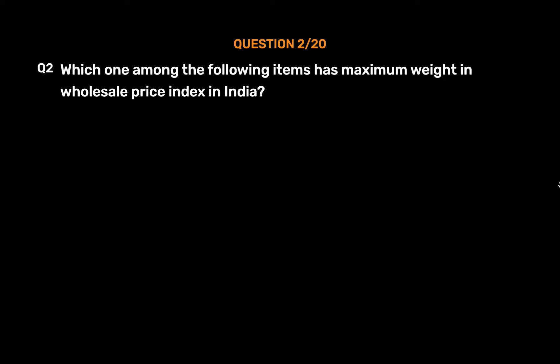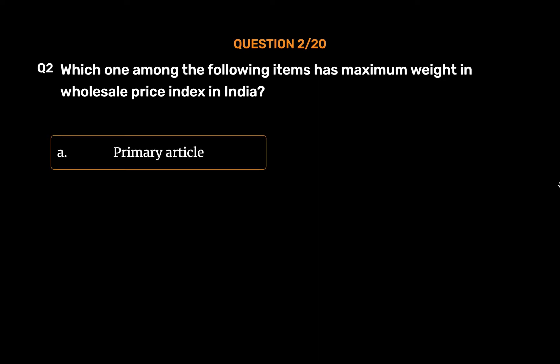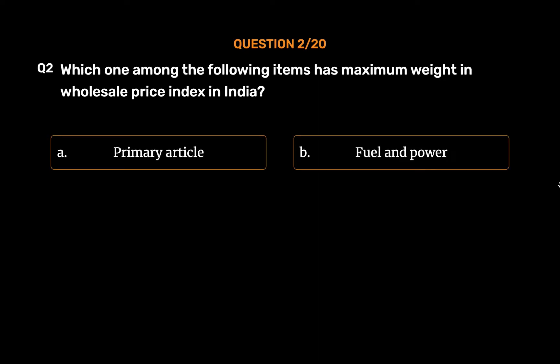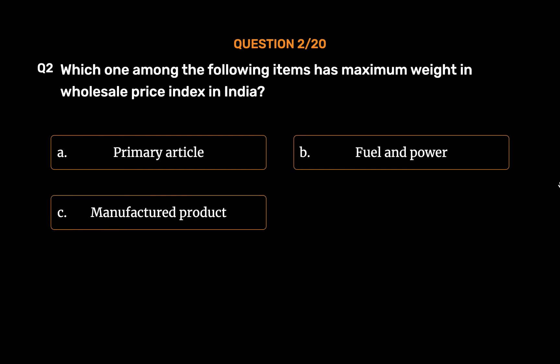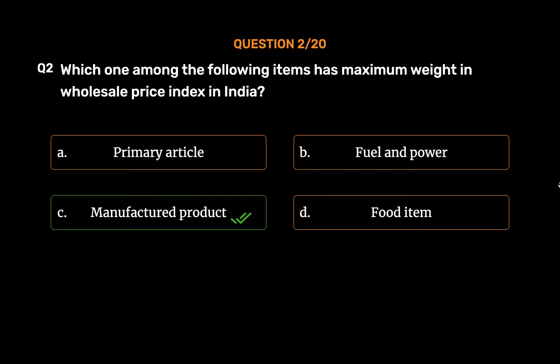Question No. 2: Which one among the following items has maximum weight in the Wholesale Price Index in India? Option A, Primary Article; Option B, Fuel and Power; Option C, Manufactured Product; Option D, Food Item. The correct answer is Option C, Manufactured Product.